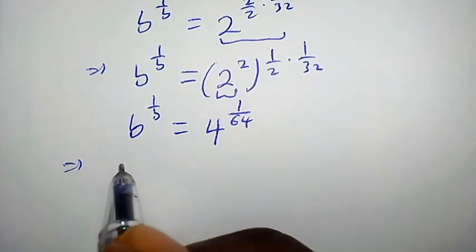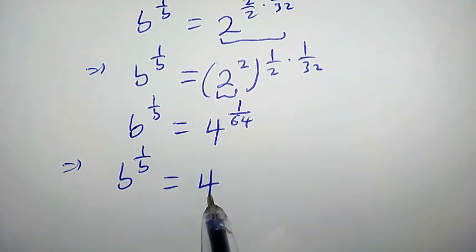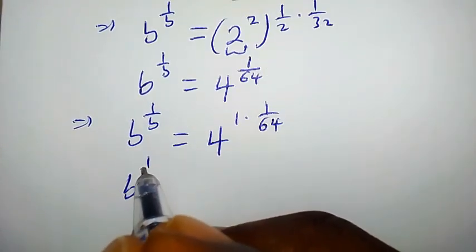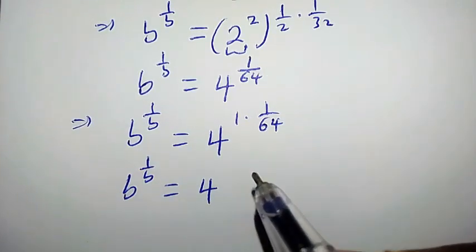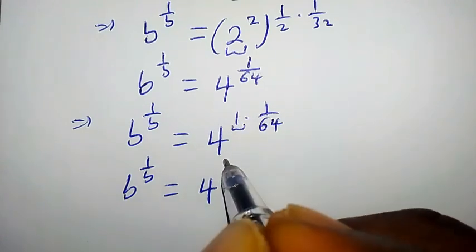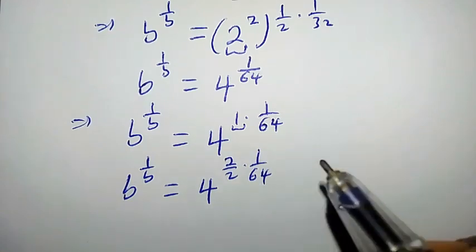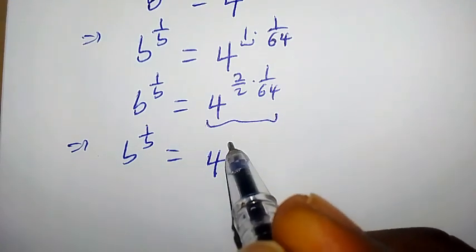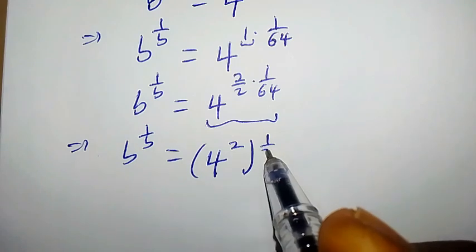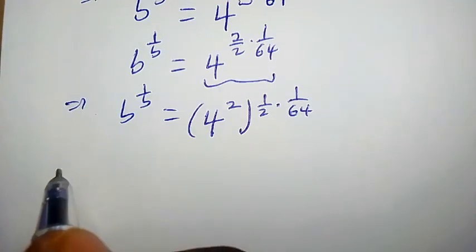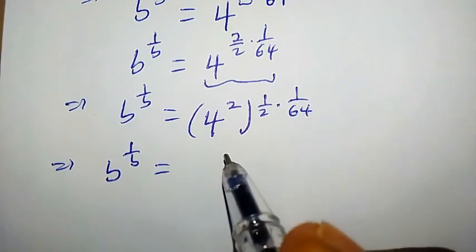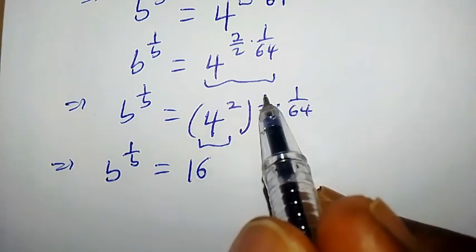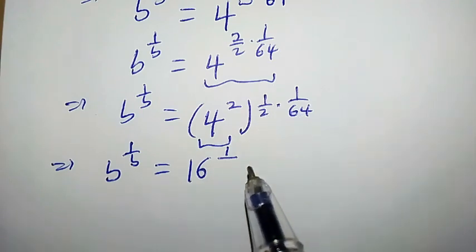1 times 1, that is 1 over 2 times 32, that is 64. This implies that b to the power of 1 over b is equal to 4 to the power of 1 over 64. Also, 1 over 64 can be written as 1 times 1 over 64. Like we did earlier, we can write 1 as 2 over 2, so it becomes 2 over 2 times 1 over 64. This gives us 4 to the power of 2 times 1 over 2 times 1 over 64. What is 4 to the power of 2? That is 16. So we are left with 1 over 2 times 1 over 64, that is 1 over 128.